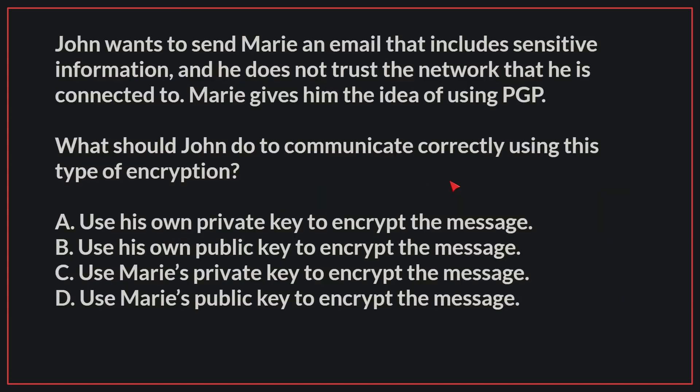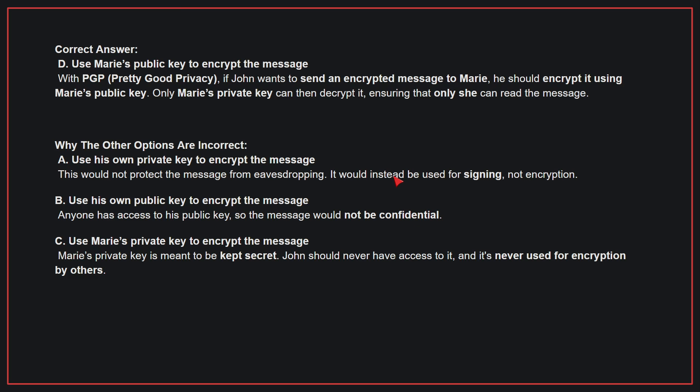John wants to send Mary an email that includes sensitive information and he does not trust the network that he is connected to. Mary gives him the idea of using PGP. What should John do to communicate correctly using this type of encryption? The correct answer is D: Use Mary's public key to encrypt the message. With PGP, if John wants to send an encrypted message to Mary, he should encrypt it using Mary's public key. Only Mary's private key can then decrypt it, ensuring that only she can read the message.